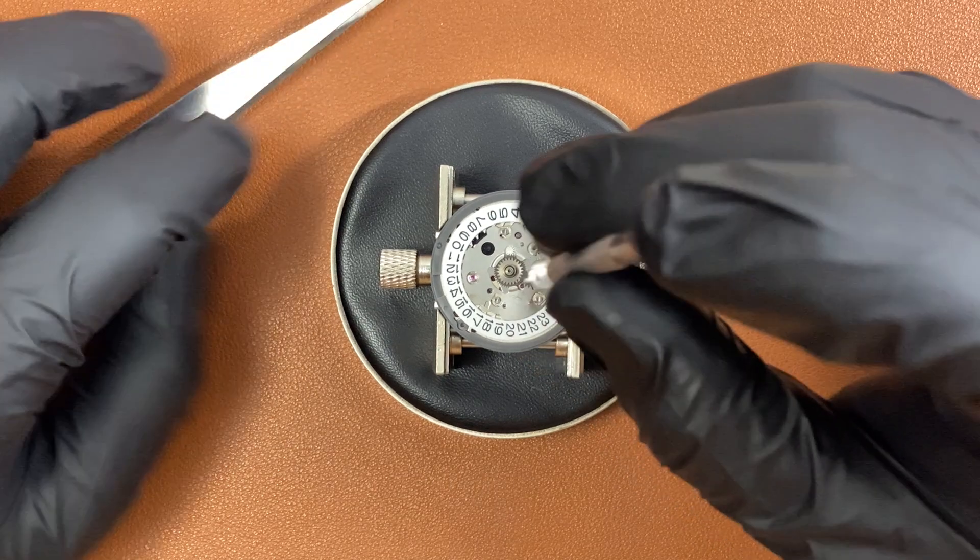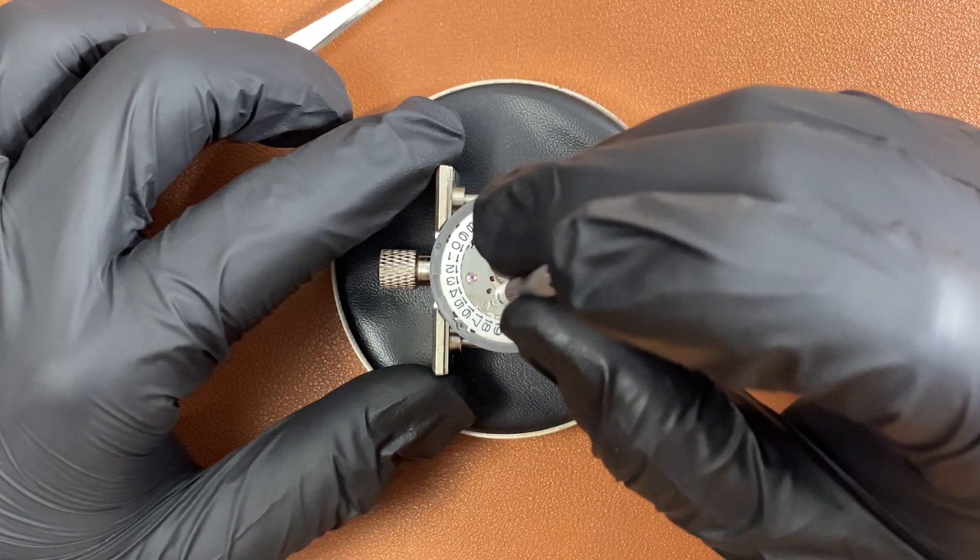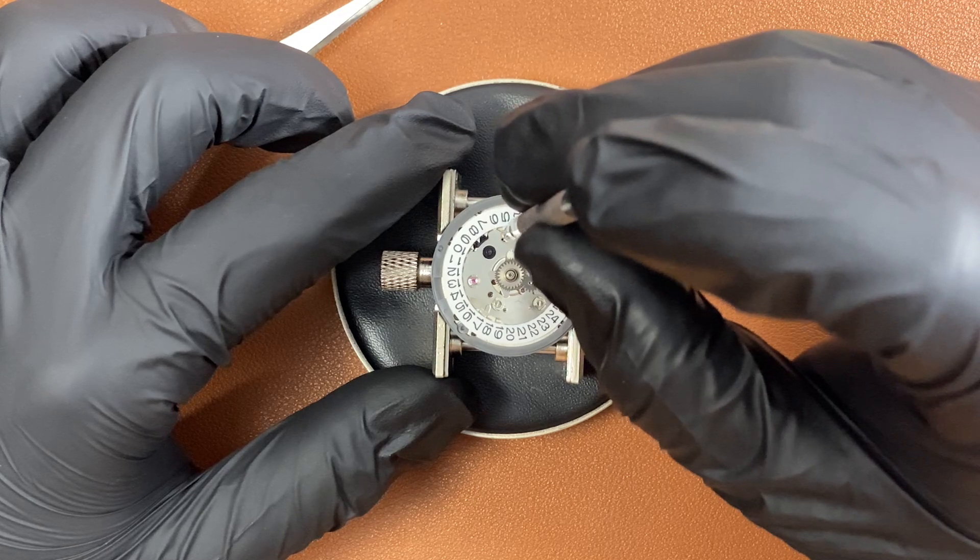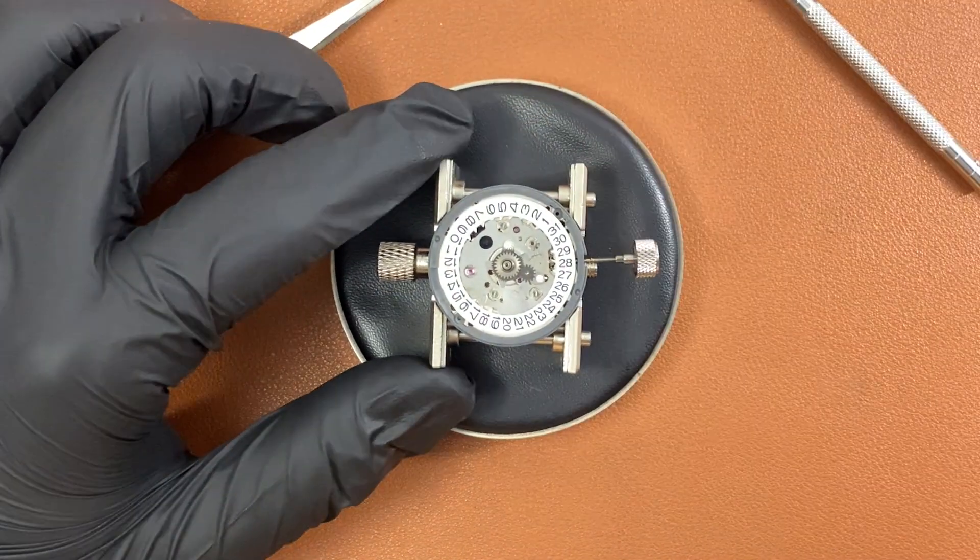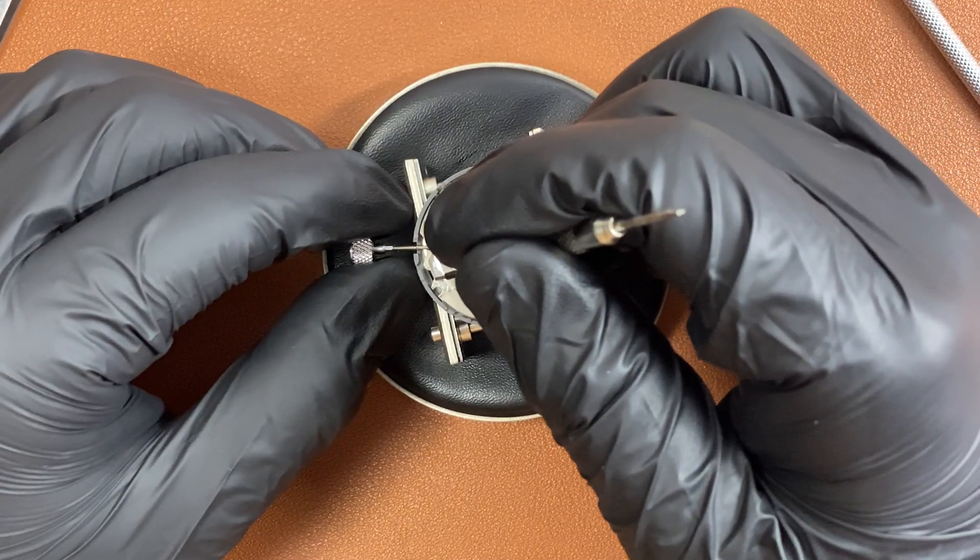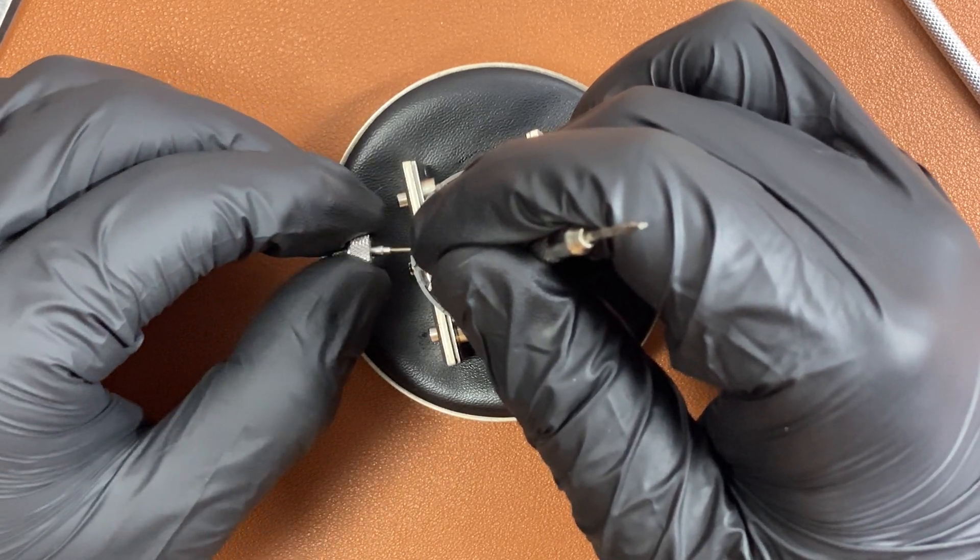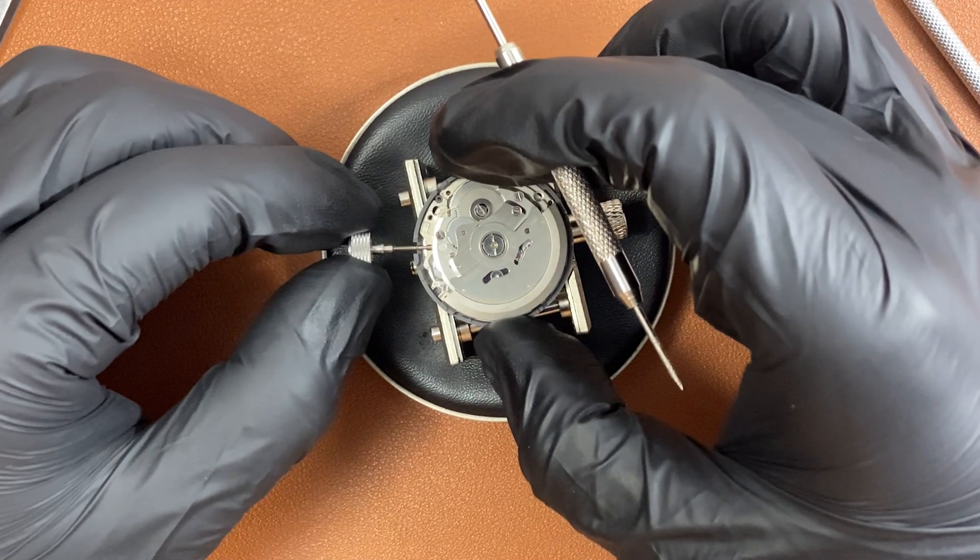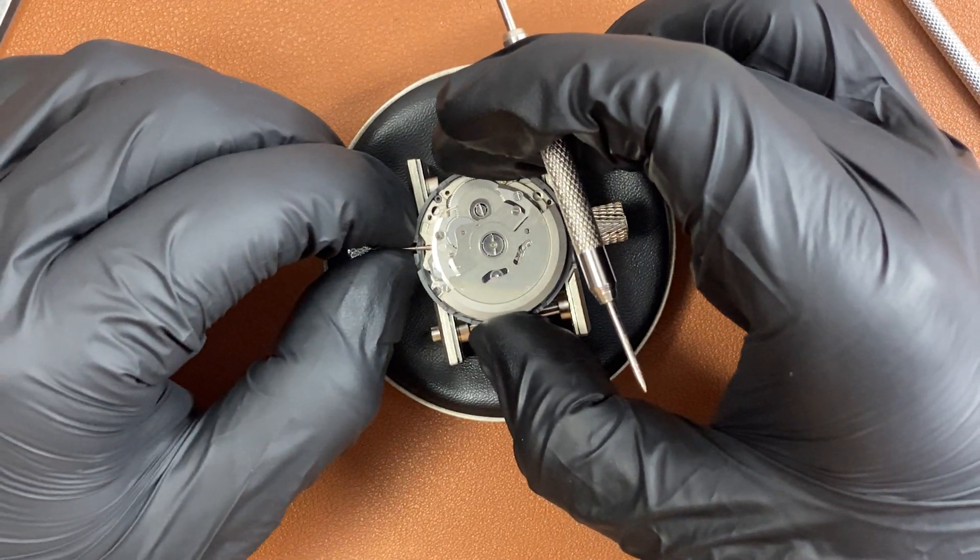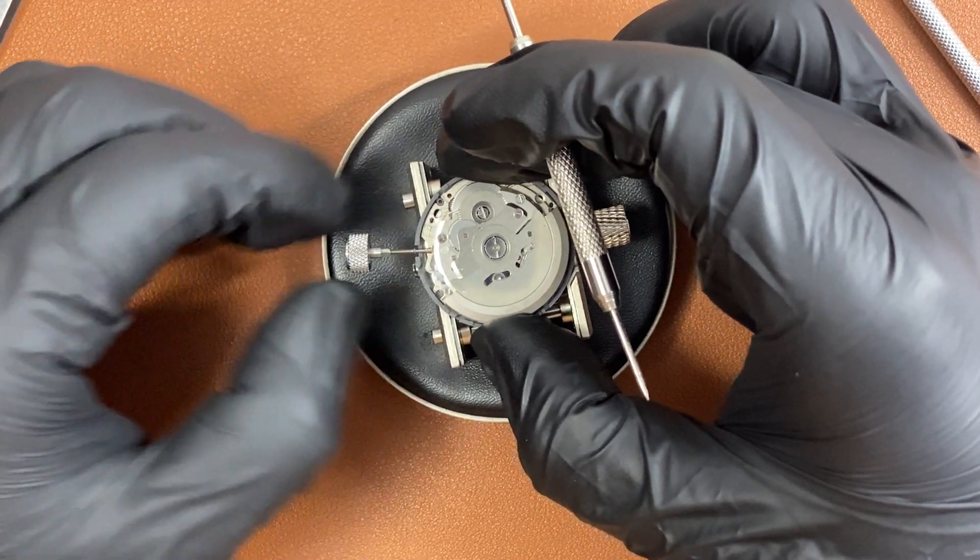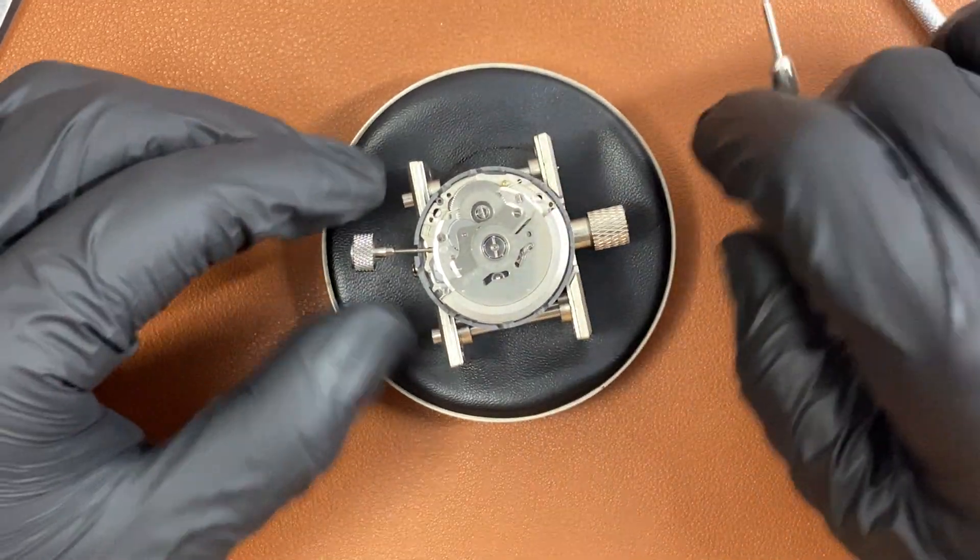Now just making sure all the screws are tightly screwed down so things are not moving here and there. I'm just pulling out the stem and putting it in, make sure the stem engages with everything inside the movement. And now I'm confirming it's engaged properly.